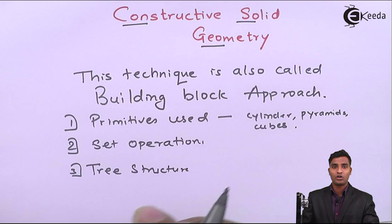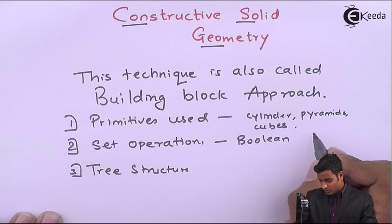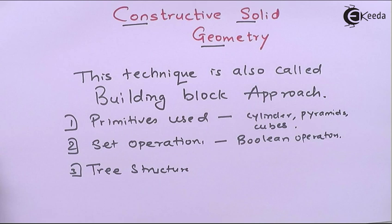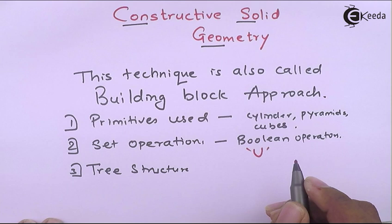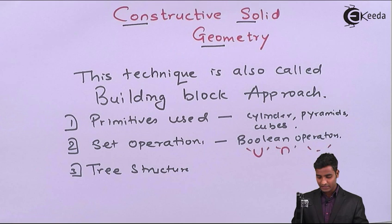For set operations, we require Boolean operators. The Boolean operators used in this technique are union, intersection, and difference operators. These three operators are used in set operations, and on the basis of set operation results, we develop a tree structure.